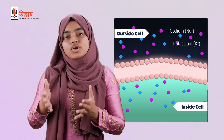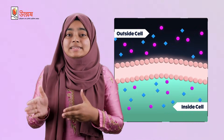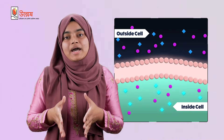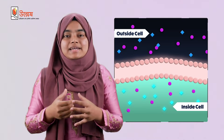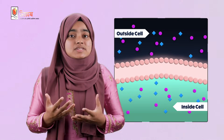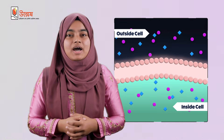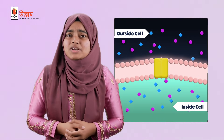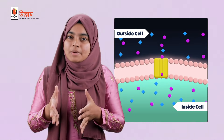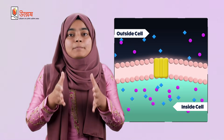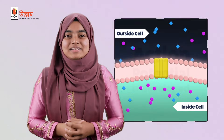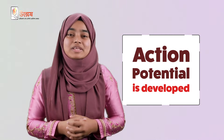Outside the neuron, or in the extracellular fluid, there is sodium ion in higher concentration. Conversely, potassium ion is more concentrated inside the neuron. Usually, the cell membrane of the neuron is not going to allow free movement of ions through it. But in response to any stimulus, the permeability of the membrane will increase, allowing sodium ions to enter the neuron and potassium ions to exit the neuron. So action potential is developed within the neuron.